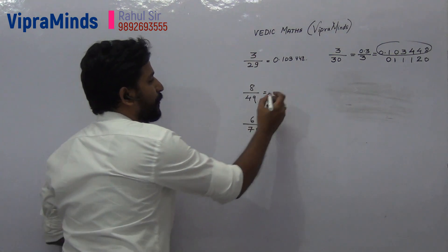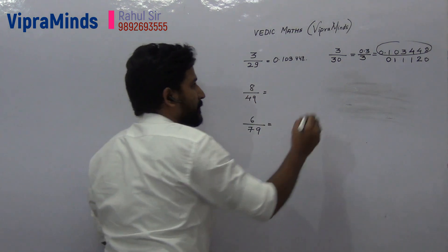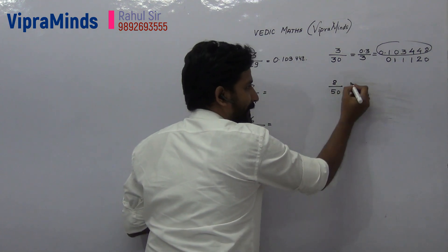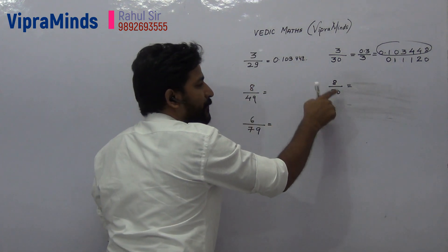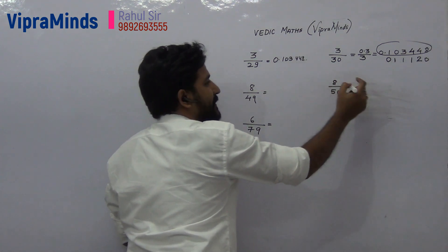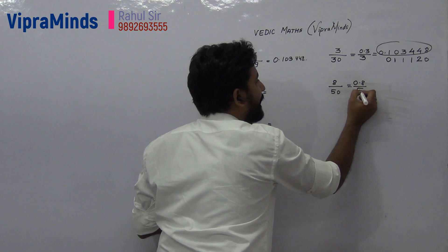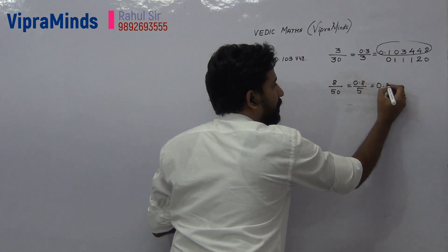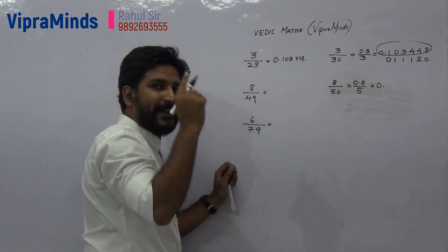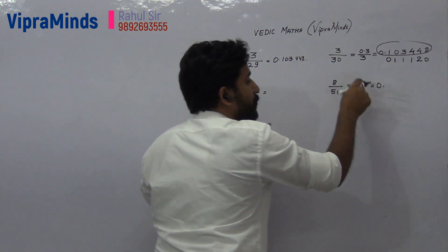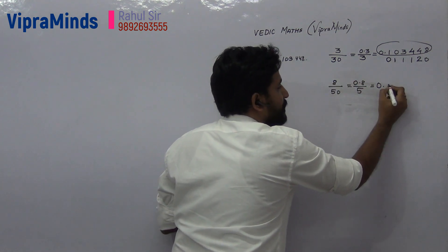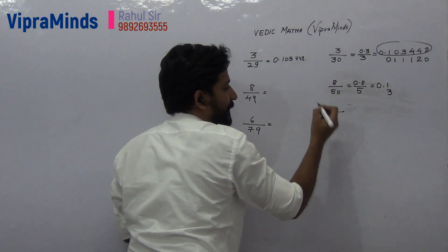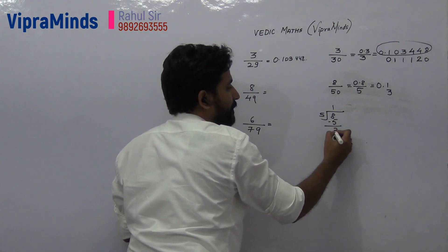The same procedure applies for the next example: 8 divided by 49. Increase the denominator by 1, so it becomes 50. Remove the 0 and shift the decimal point one digit to the left, giving 0.8 divided by 5. Now divide 8 by 5: 5 into 1 is 5, remainder is 3. So quotient is 1, remainder is 3.